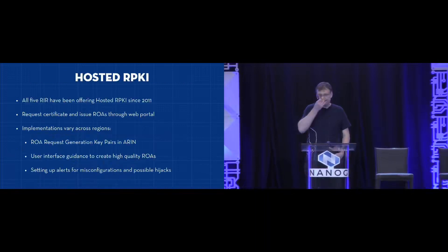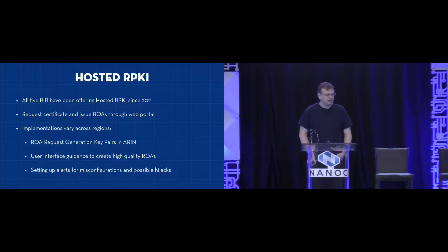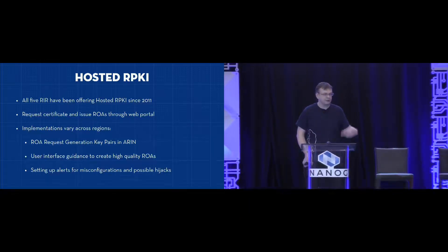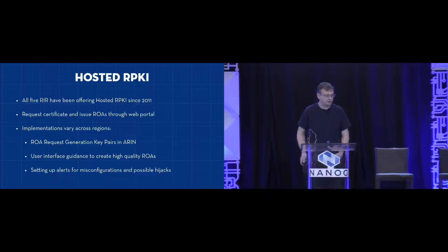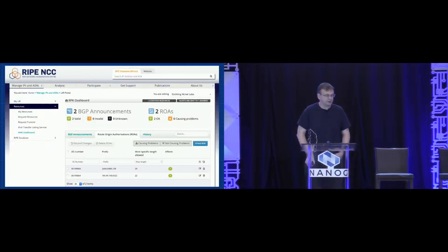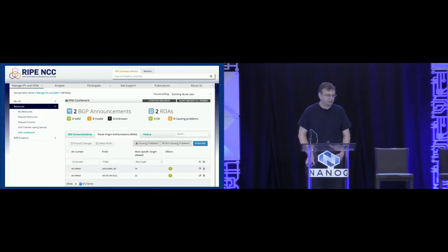All five RIRs have had a hosted service since 2011. Basically, you go into their portal, click around, and then get your ROAs published. The concept differs between the five RIRs — with ARIN you still have to deal with key pairs, for instance, while with the RIPE solution you really just go in there and click around to create your ROAs. It even helps you — as you can see with our own little network with a massive two prefixes and one ASN — by showing the announcements they have seen so you can be sure to create correct ROAs.